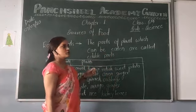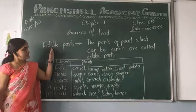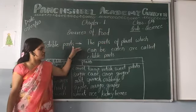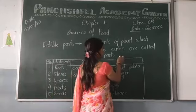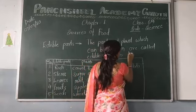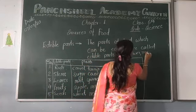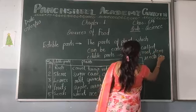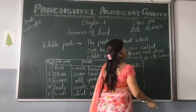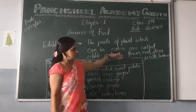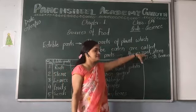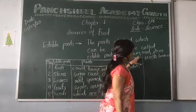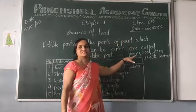The parts of plants which can be eaten are called edible parts. From plants we may eat the flower, root, stem, seeds, or leaves — it means whole parts of a plant can be eaten.